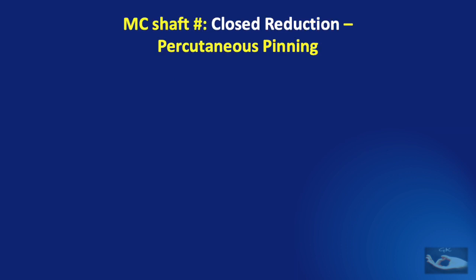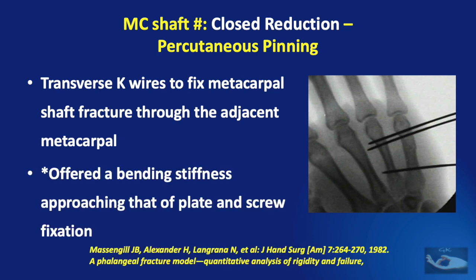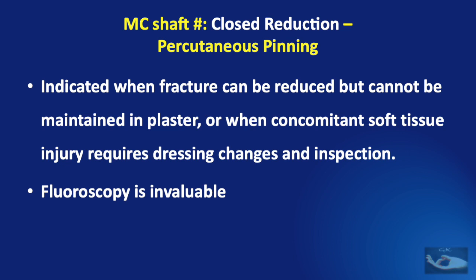An alternative method after closed reduction is percutaneous pinning. It could be transverse pinning by application of transverse K-wires to fix the metacarpal shaft fracture through the adjacent intact metacarpal. It needs two wires distally and one wire proximal to the fracture. A study found that this method of percutaneous pinning offered bending stiffness approaching that of plate and screw fixation. This technique can be used when the fracture can be reduced but cannot be maintained in a POP splint, or when concomitant soft tissue injury requires dressing changes and inspection. Fluoroscopy is invaluable in carrying out this procedure.